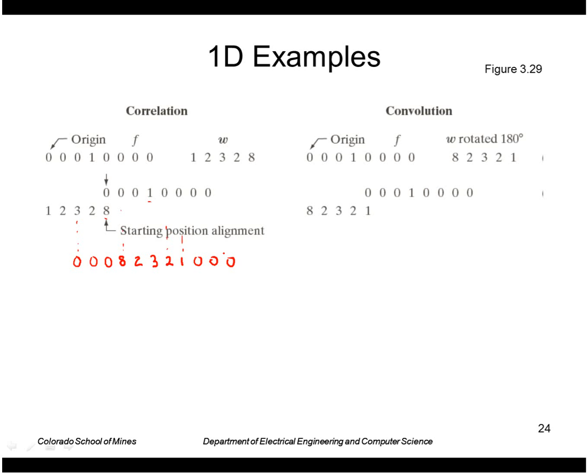To do convolution, remember I first flip the mask and then do correlation. Similarly, starting in this position everything is zero. When centered at the impulse, the one overlaps with the one giving one as output. The next position gives two, then three, two, and eight.